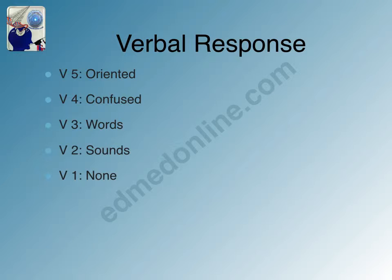In summary for verbal response: V1 is no response, V2 is sounds, V3 is words, V4 is confused speech, V5 is fully oriented speech about time, place, and person. V(NT) is assigned when verbal response is not testable.